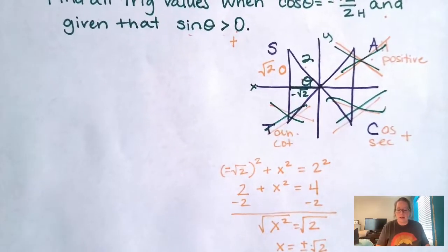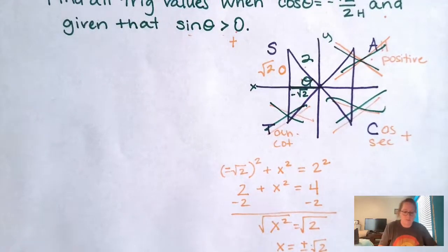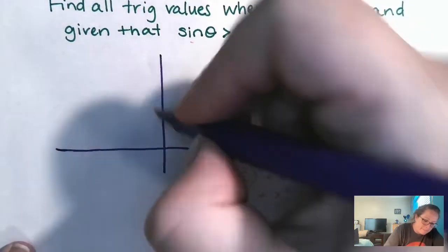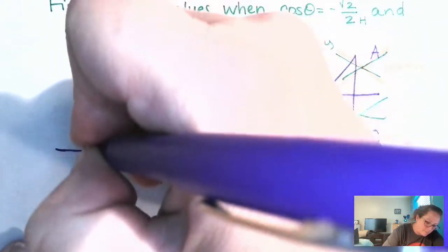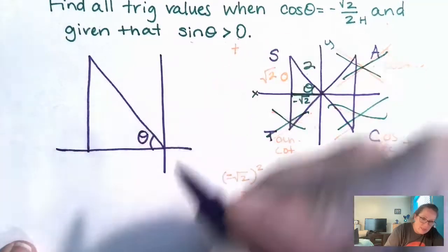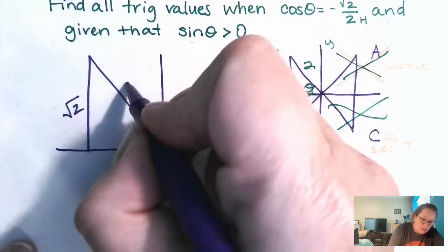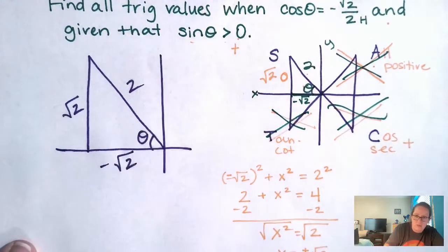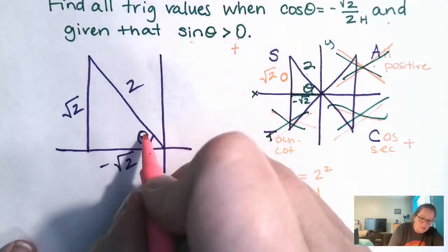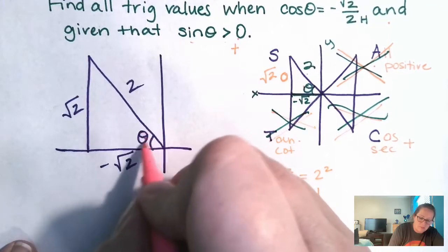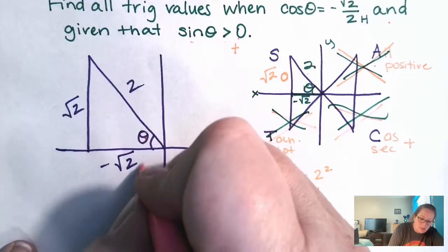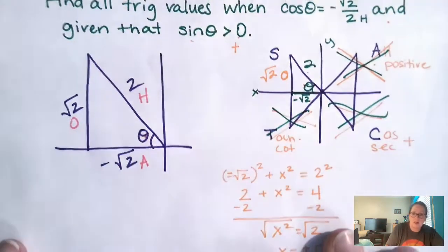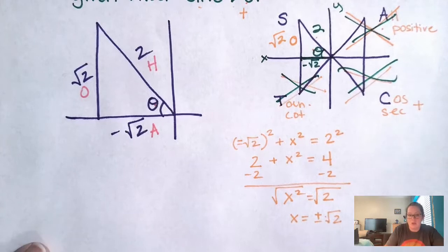All right. So now that we have all of our sides, I'm going to just redraw this so you guys can see it a little bit better. We have theta. We have square root of two we just found. We have the hypotenuse of two, which was given to us. And we have negative root two, which is given to us. And then let's go ahead and label from the theta, adjacent side, opposite side, hypotenuse side. Okay. And then we want to find all of our trig values.